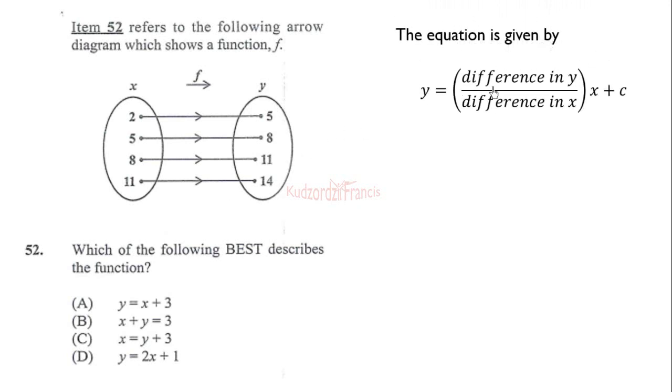One way is to find the difference in the y values over the difference in the x values. From 5 to 8, the difference is 3, a constant difference. Then 8 to 11 is 3, and 11 to 14 is also 3. So the difference is constant. The difference in x values is also 3, 3, 3. So we have 3 over 3 times x plus c, which is the same as y equals x plus c.